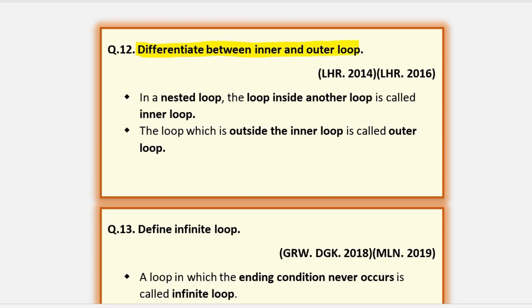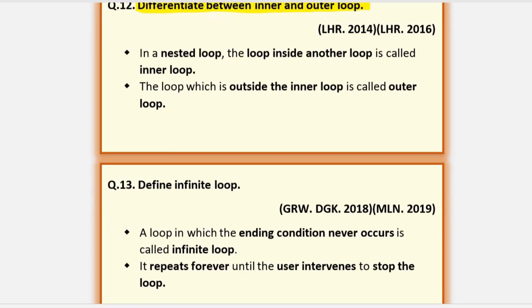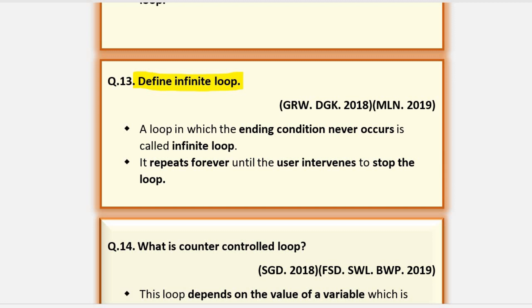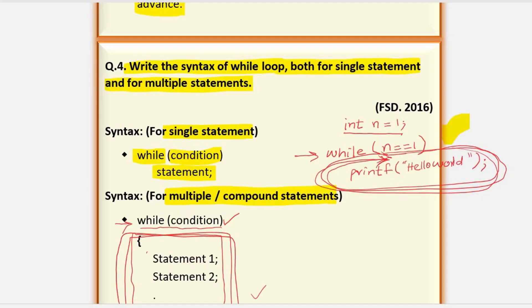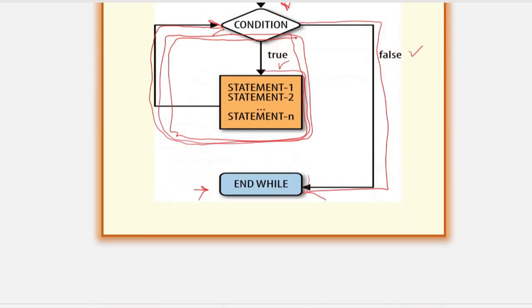Next question: differentiate between inner and outer loop — which we have already discussed. Define infinite loop. An infinite loop is a loop whose ending condition never becomes false, meaning it keeps running continuously. For example, in the while loop example where n is equal to 1 and n is never changed anywhere, the condition will always remain true and the loop will keep running unless the user forcefully stops it. Such a loop is called an infinite loop.